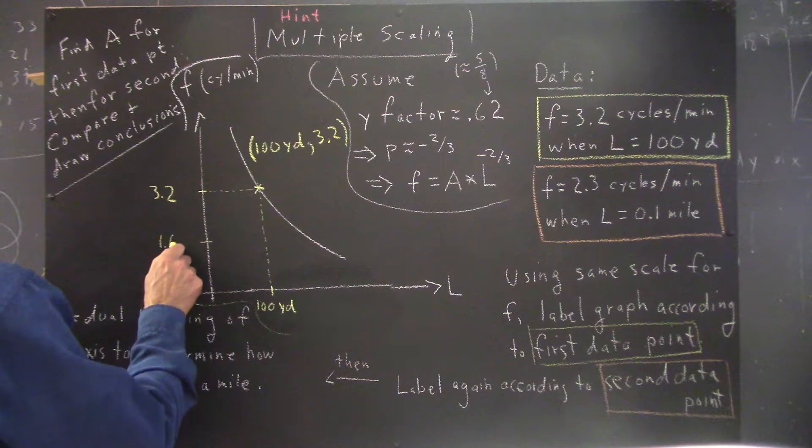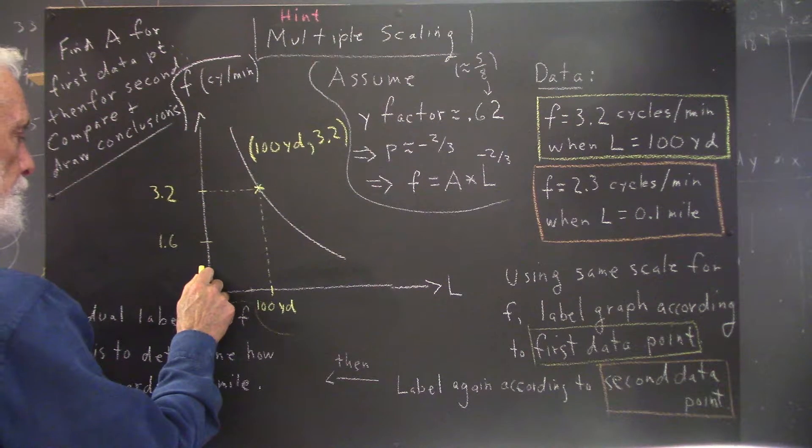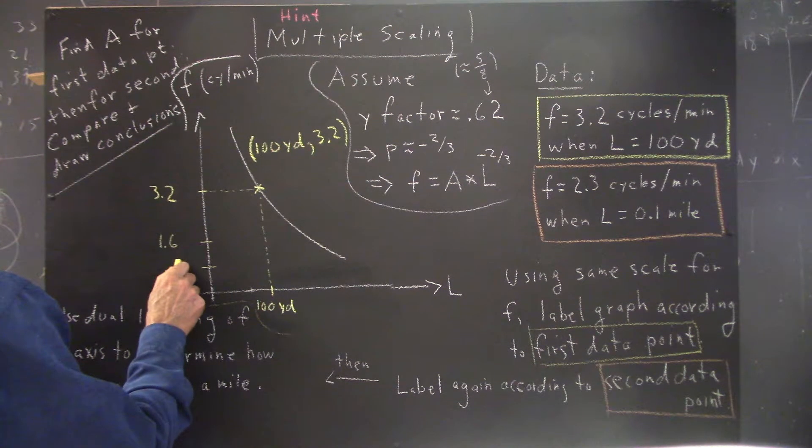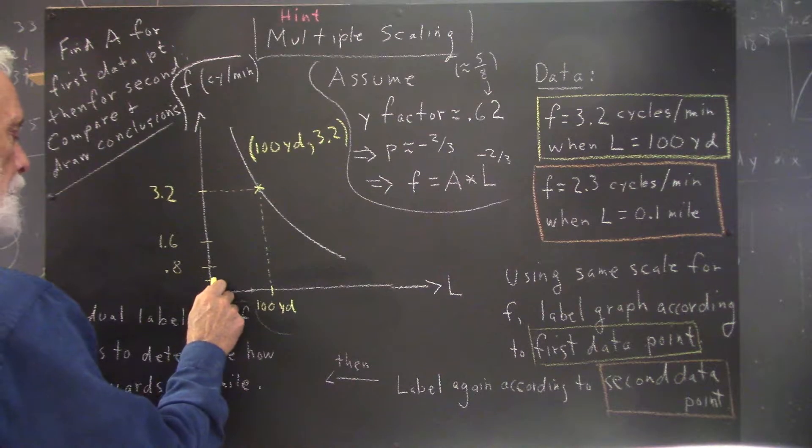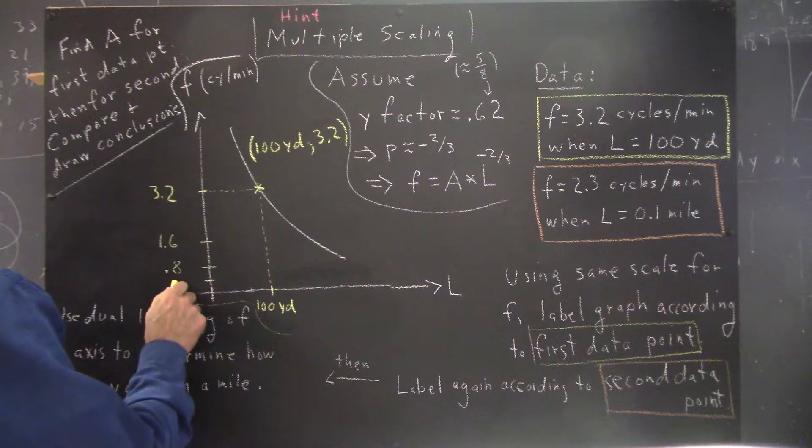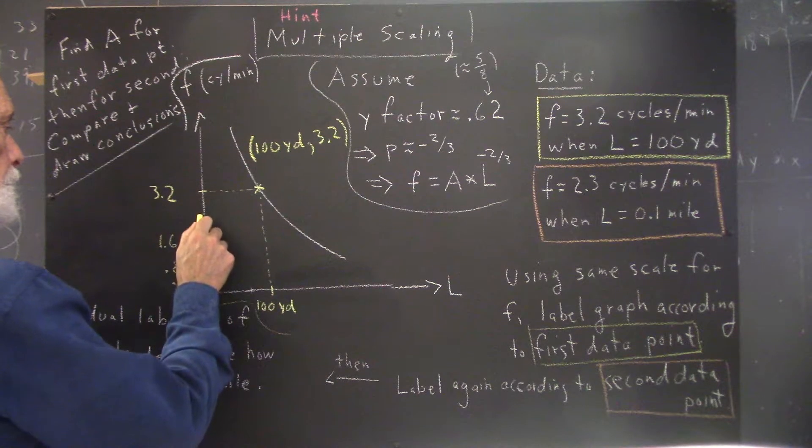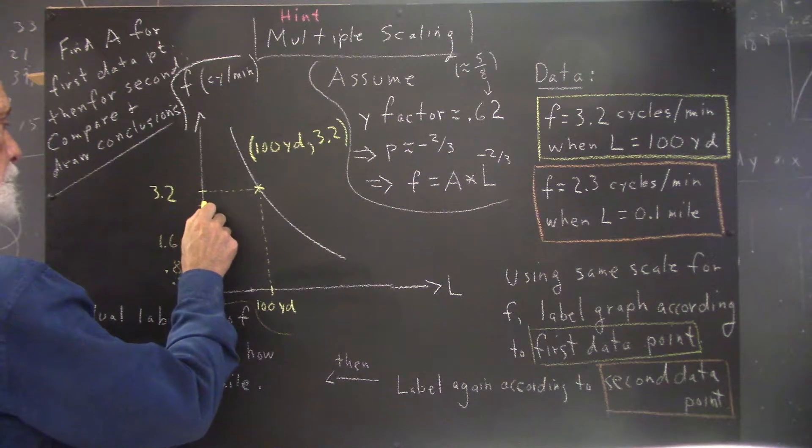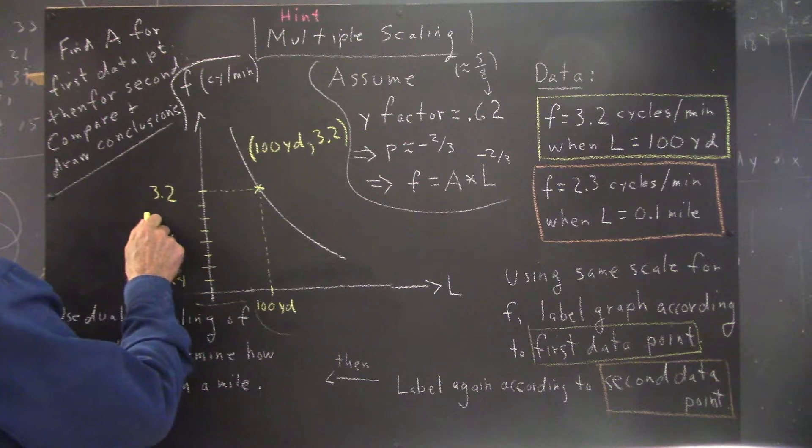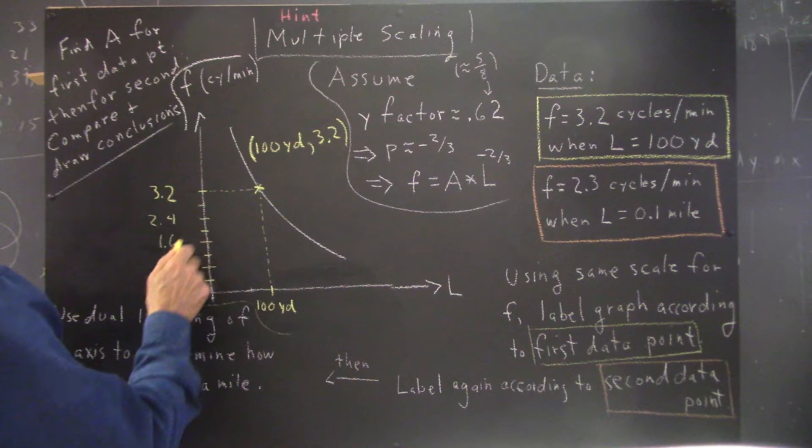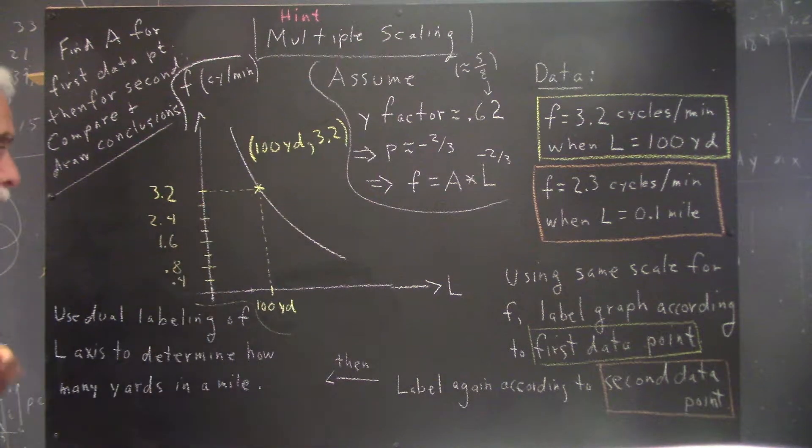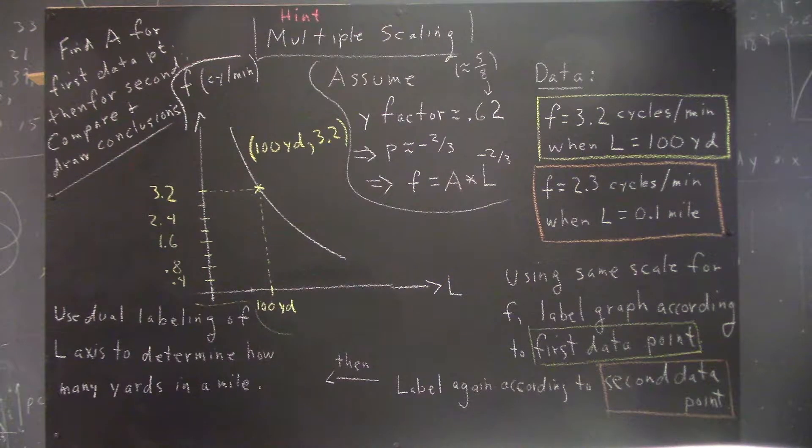Here's half of 3.2, which is 1.6. Here's half of that, which is 0.8. Half of that is 0.4. And we can put a couple more marks here and some more marks up here. Here would be 2.4. Leave this mark and this mark unlabeled in this one because it would get too crowded.